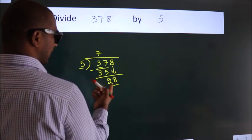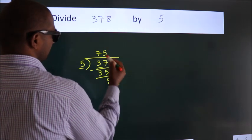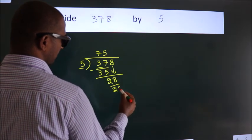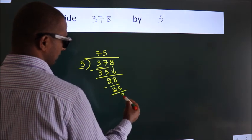A number close to 28 in the 5 table is 5 times 5 equals 25. Now we subtract. We get 3.